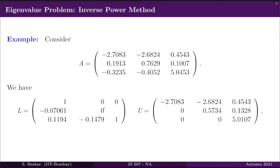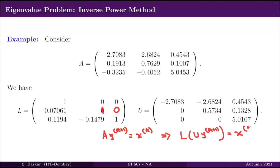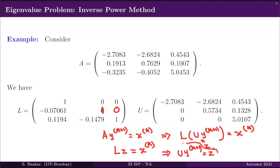With L and U obtained, I can write my system A·y_{k+1} = x_k as L·U·y_{k+1} = x_k. Setting U·y_{k+1} = z, I first do a forward substitution using the lower triangular system L·z = x_k to get z, and then solve U·y_{k+1} = z to get the required vector y_{k+1}.